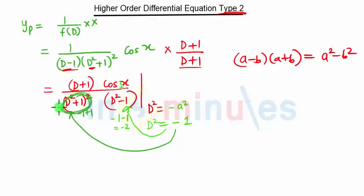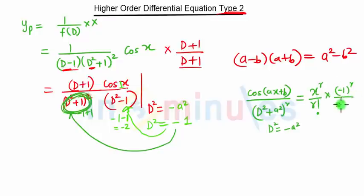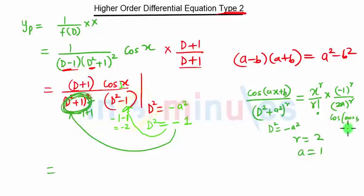Since this part is creating a problem, we know that whenever we have cos(ax + b) upon (d² + a²)^r and substituting d² = -a² makes that term zero, the solution is given by x^r upon r! times (-1)^(r/2) times (2a)^r, times cos(ax + b + r·π/2). In our case r is 2 and a is 1.